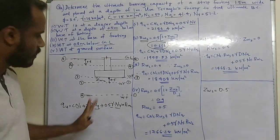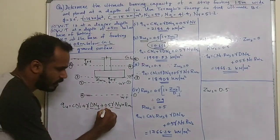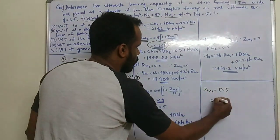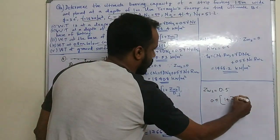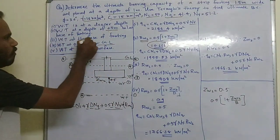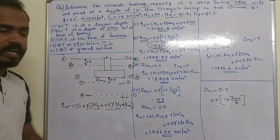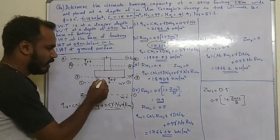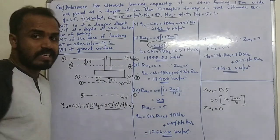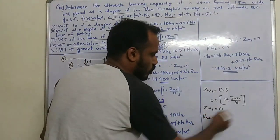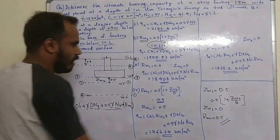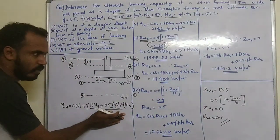For Condition 3, the water table is at the base of the footing, so Zw2 = 0. Substituting into the Rw2 formula gives Rw2 = 0.5. The answer for this condition is Q = 1955.53 kN/m².